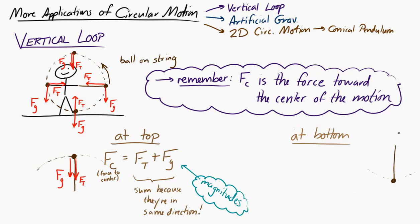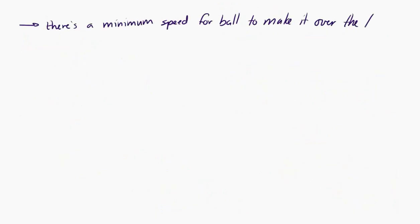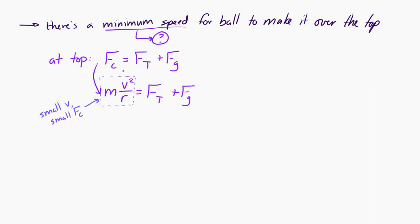At the bottom of the path, the tension force is upward along the string and the weight is downward, so the centripetal force — the force toward the center — is the tension force minus the weight. Now, if you've ever done this, you know there's a minimum speed for the ball to make it over the top. A smaller speed means a smaller centripetal force, which equals M times V squared over R.